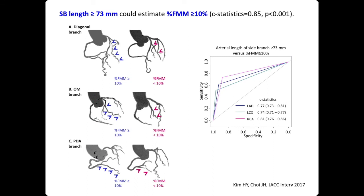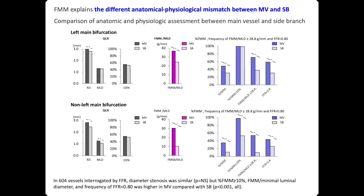For precise calculation of fractional myocardial mass, we need CT, but from angiography we can reasonably estimate the amount of myocardium subtended by the side branch. If the side-branch length is more than 73 mm, we suggest it has a significant role. Fractional myocardial mass also explains why there is a mismatch of anatomy and physiology between main branch and side branch — the side branch always has a smaller myocardial mass, the frequency of myocardial ischemia is lower, and FFR is higher in the side branch.